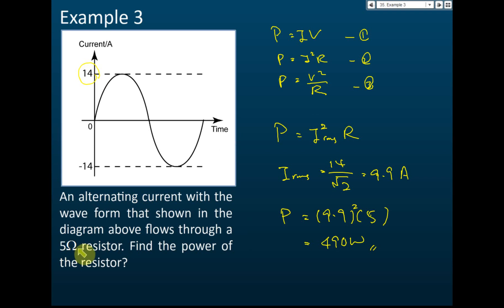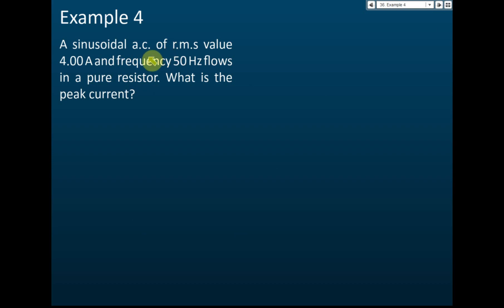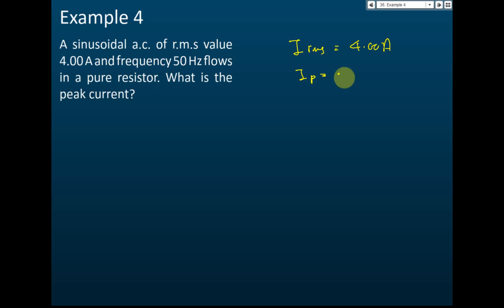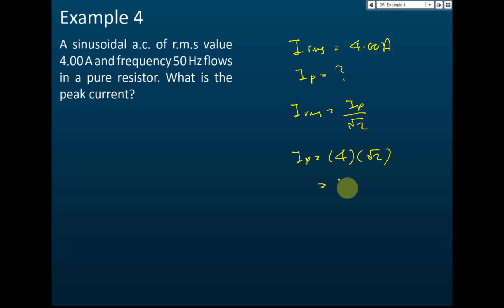Example four: A sinusoidal alternating current of root mean square value 4.00 ampere — note that RMS applies only to sinusoidal currents. They give I_rms equals 4.00 ampere and ask for peak current I_p. Using I_rms equals I_p divided by root 2, therefore I_p equals 4.00 times root 2, giving 5.7 ampere.